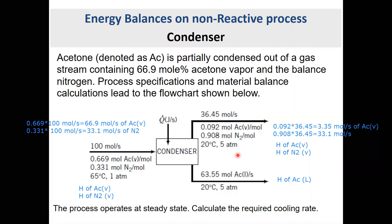You cannot calculate absolute enthalpy at a specific point, but you only need delta H — the enthalpy at a point minus enthalpy at a reference point. So you choose a reference point, set its enthalpy to zero, and calculate enthalpy at all other points relative to it. You need one reference point for acetone and one reference point for nitrogen.